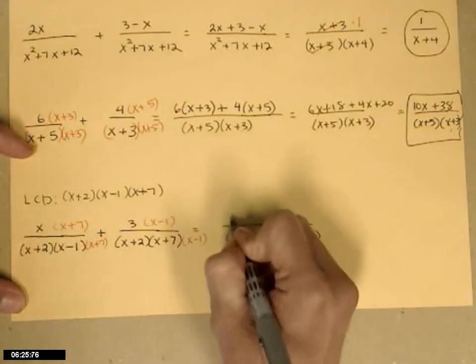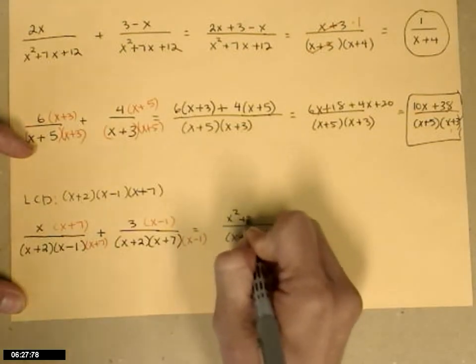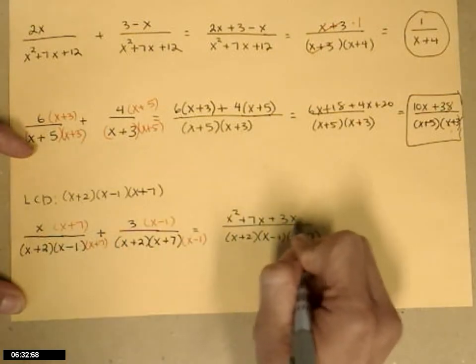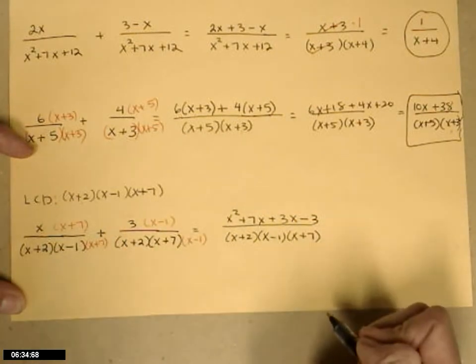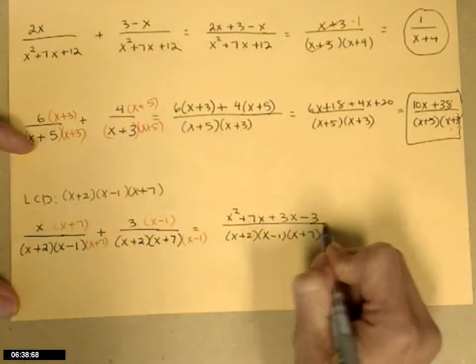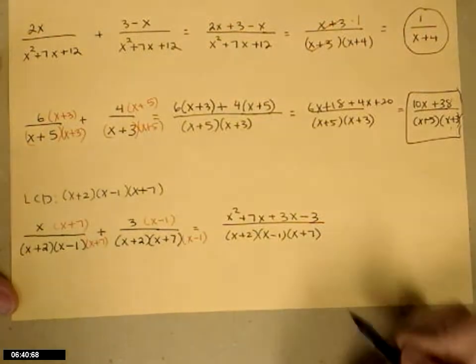So the new numerator is going to be x squared plus 7x, and then it's plus 3x minus 3. I've gathered the numerators, and I've distributed to get rid of the parentheses. If you want to pause, you can do that in two steps and catch up.